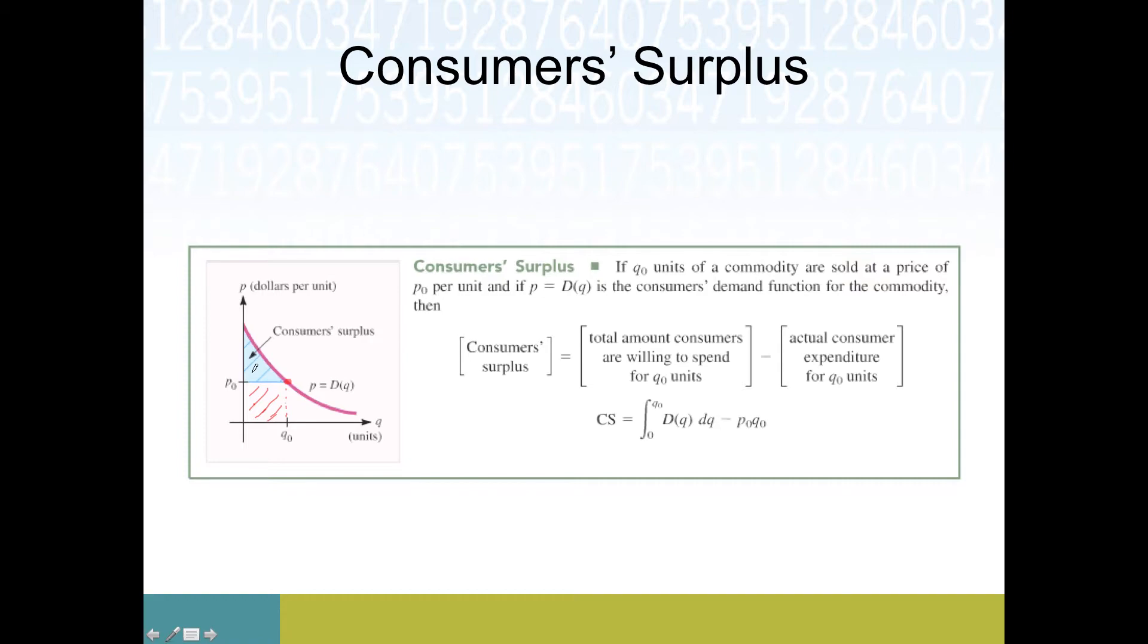If I'm the consumer who's at this point on the demand curve, any of these prices between P naught and my height seem good to me. I'm willing to pay twelve hundred dollars, I see a price of eight hundred dollars, that's going to feel like savings. So this idea of consumer surplus is kind of psychological, but it's the notion that consumers are seeing a price that's lower than what they were willing, and that feels good.